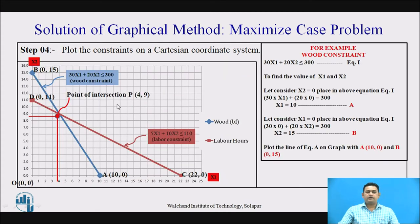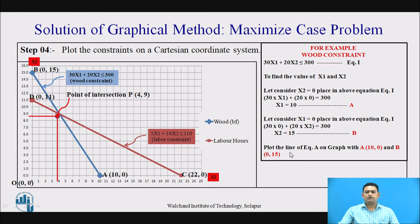With the help of the above formulated equations, we have to plot the graph. The blue color line represents the first constraint, that is the wood constraint, and the second brown color line represents the second constraint, that is labor hour availability. To get the values of x1 and x2 for the first constraint, we place x2 = 0 to obtain x1, and place x1 = 0 to find x2. These points are then used to plot the line of the wood constraint. Similarly, we carry out the same process for the second constraint.